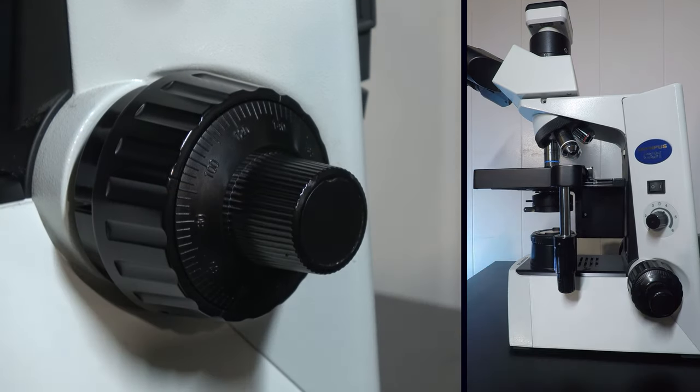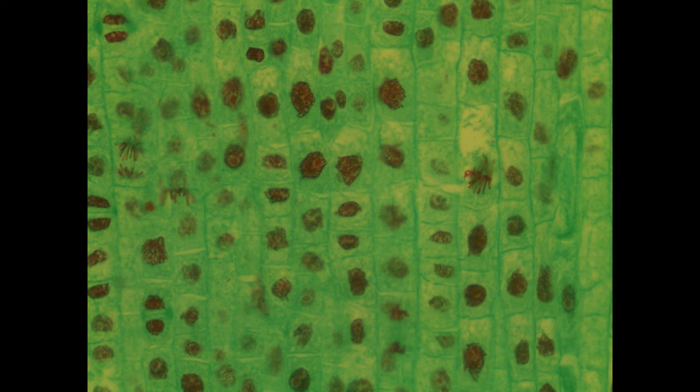Carefully adjust using the fine focus. Now we are starting to view individual cells in this plant root tip. The cellulose based plant cell walls show clear demarcations and the chromosomes are stained in red.